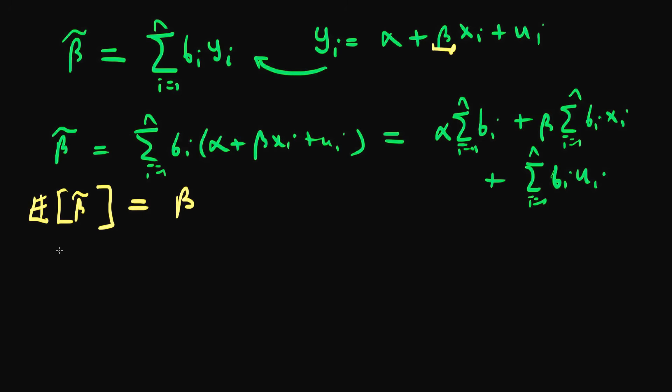So how do we derive the set of conditions for this to be the case? Well, I just need to take the expectation of both sides of the equation. So we have the expectation of beta tilde is going to be...